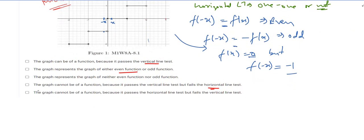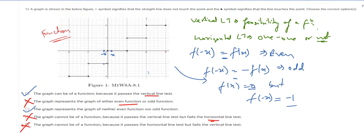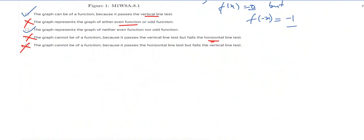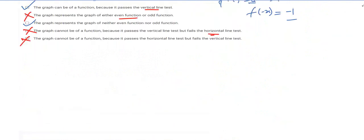Now evaluating the options: the first option says the graph can be of a function because it passes the vertical line test — this is correct. The second option says the graph represents either an even or odd function — we saw that this is wrong. The third option says the graph represents neither an even nor odd function — this is correct. The fourth option says the graph cannot be a function — this is also wrong, because the graph is indeed a function.